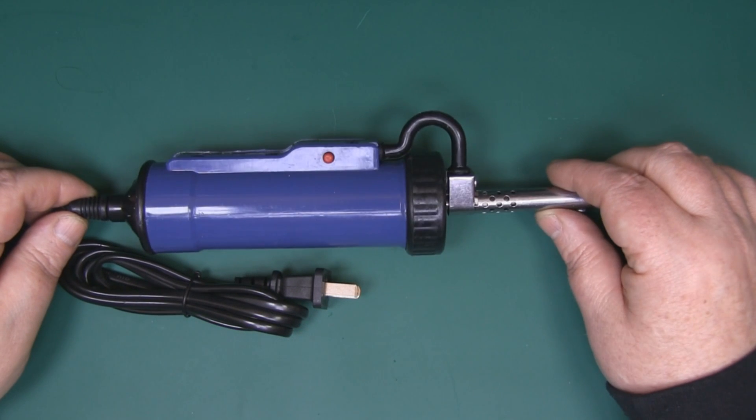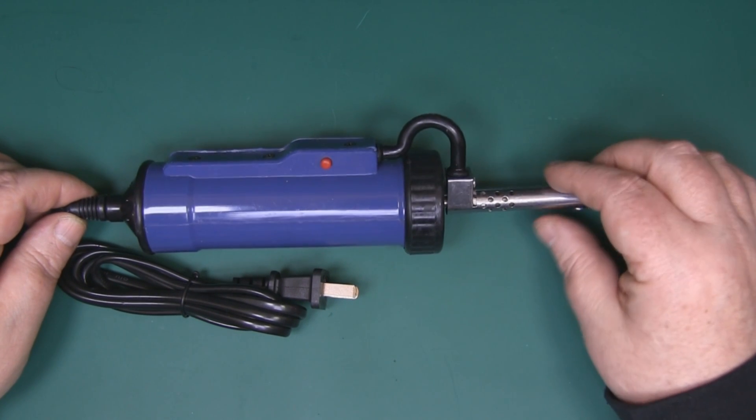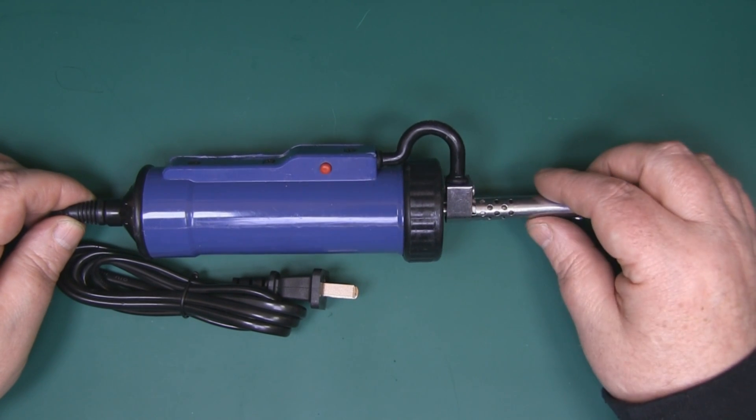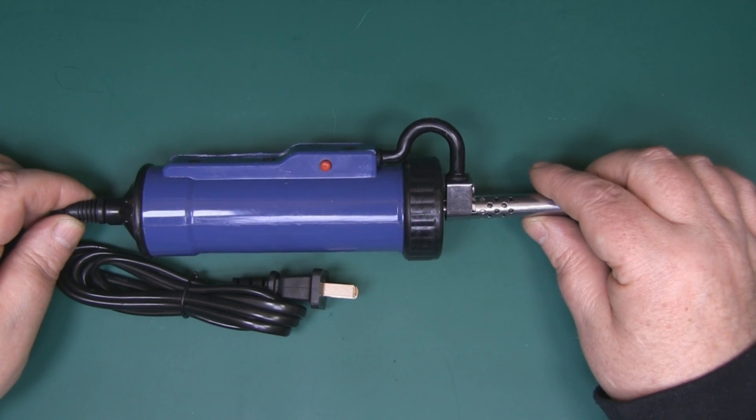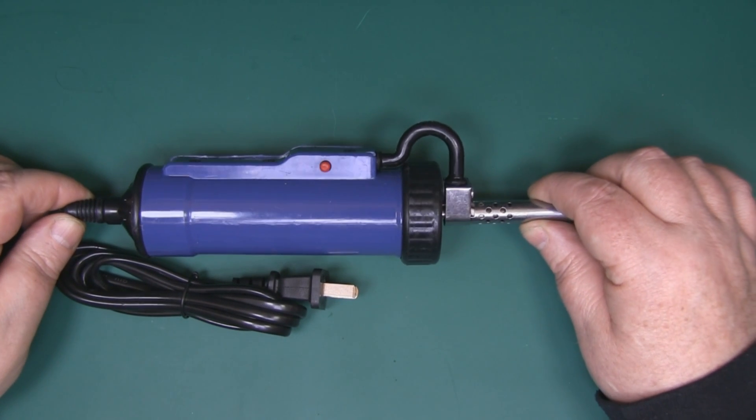So I've just picked up this desoldering pump off eBay. I ordered it off a UK seller, it cost me around £21. I could have saved a few pounds by ordering it direct from China, but it's exactly the same as the ones that you can order from China.